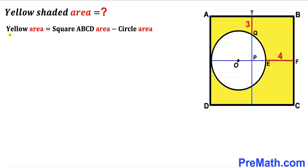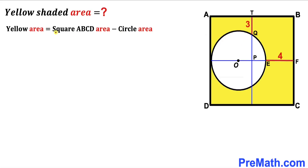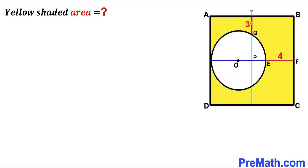The yellow shaded region area is equal to the area of square ABCD minus the area of the white circle. So our task is to calculate the area of square ABCD and the area of the circle.